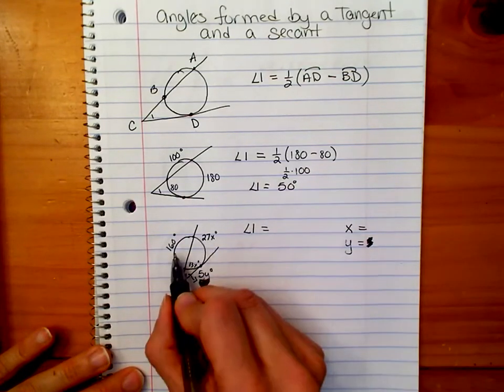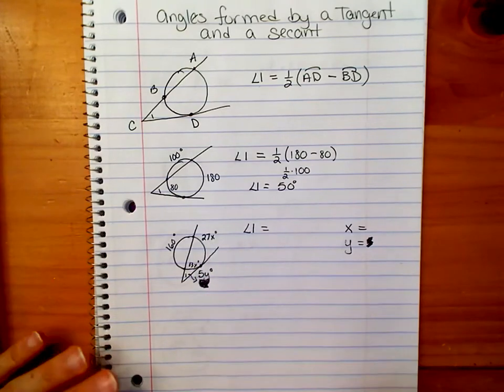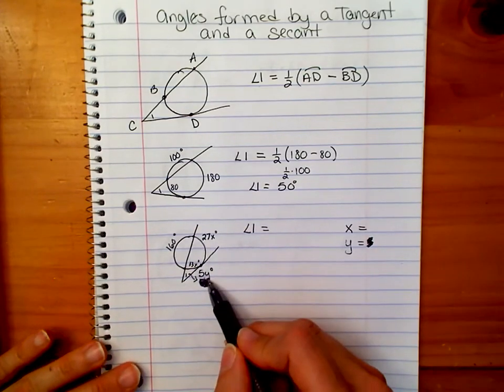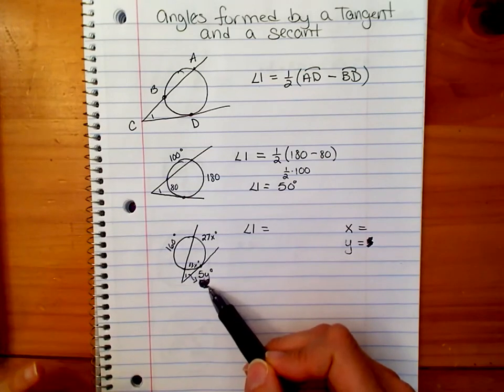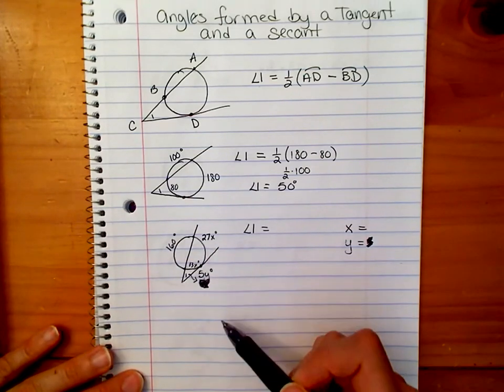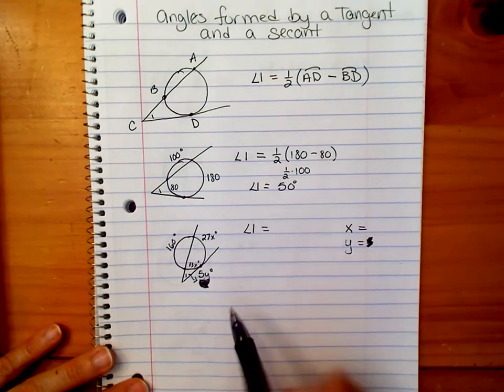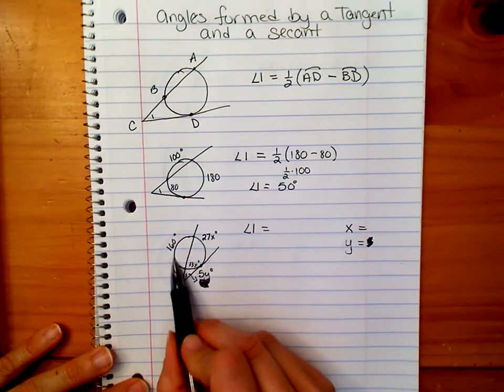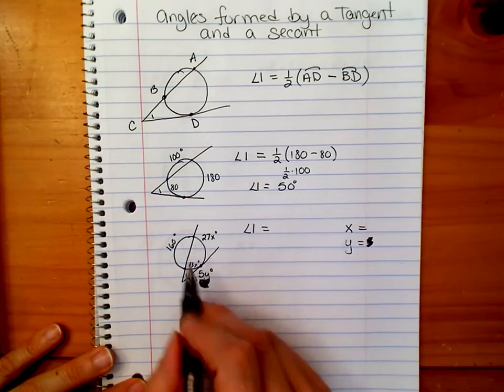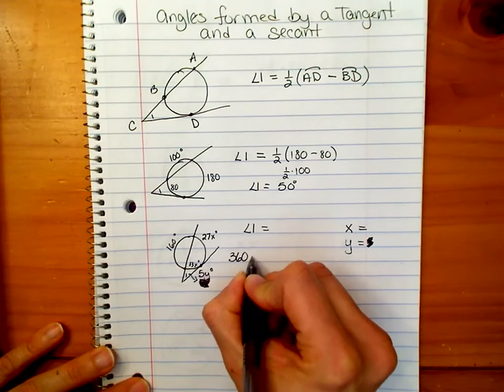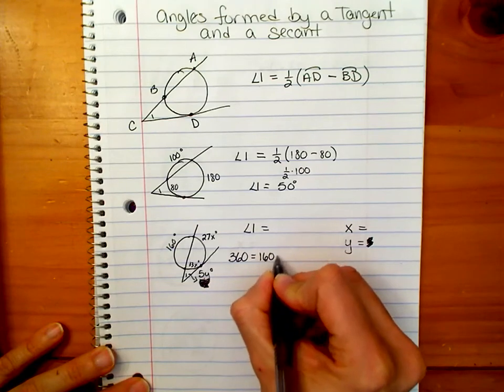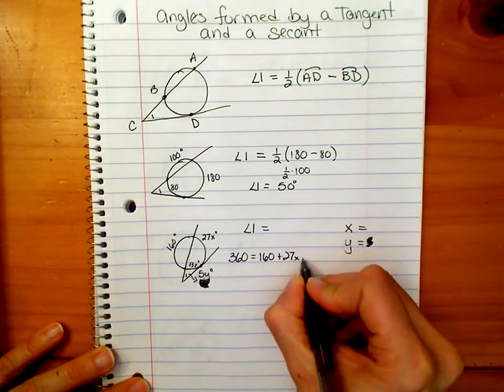Okay, so in order to find x, which we need to find first, because we can't solve this with an x and a y unless we have two equations. So first we're going to find x, then we're going to find y using x. So if we remember that all the way around the circle is 360, then we know that 360 equals 160 plus 27x plus 13x.